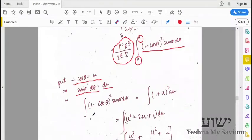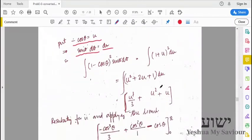Just substitute it back, that is (1 minus cos theta) squared sin theta d theta will become (1 plus u) squared du. So this is a very simple integration.